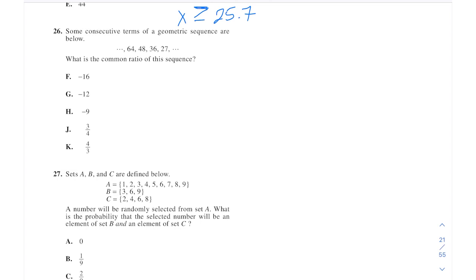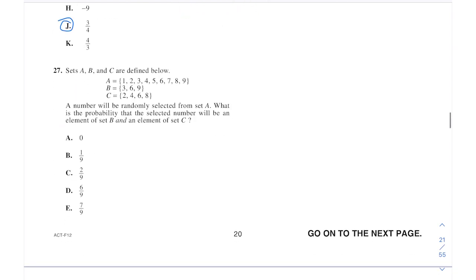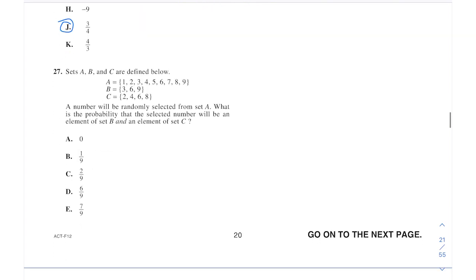Geometric just means we're multiplying. So here it looks like we're multiplying by, for each one, three-fourths. So that's J. Wait, I didn't read that one carefully. Let me just go back real quick. Yep, common ratio. Okay, good.